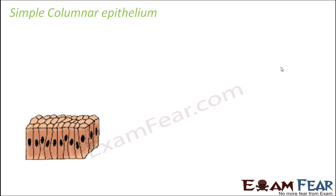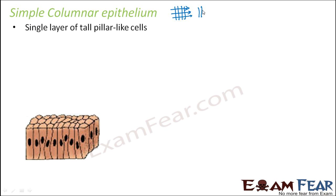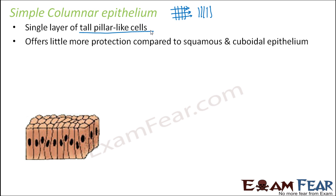Let us move on to simple columnar epithelium. Again, single layer of cells. Columnar refers to something tall — these are single layer of tall pillar-like cells. They offer a little more protection compared to squamous and cuboidal epithelium. The protection gradually increases as we move from squamous to cuboidal to columnar, because squamous cells were very thin, cuboidal cells were thicker, and columnar cells are quite tall — making a thicker and more protective layer.